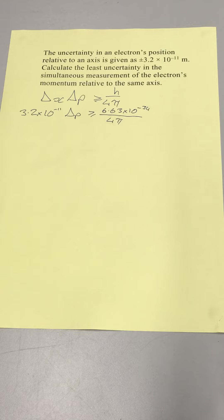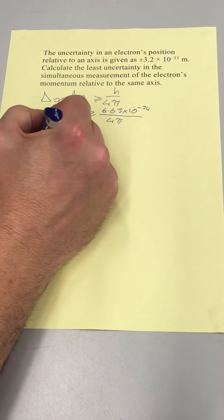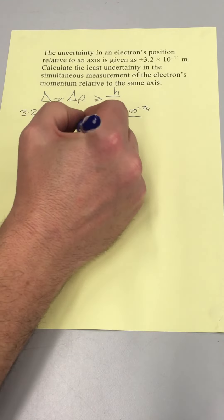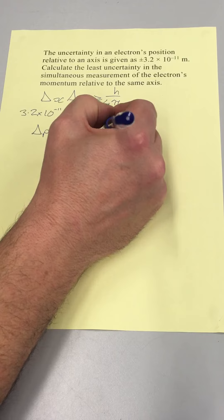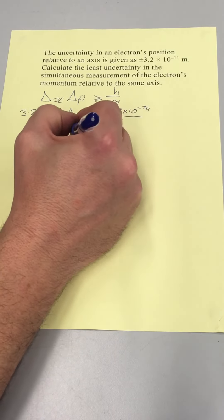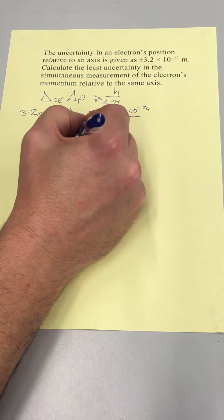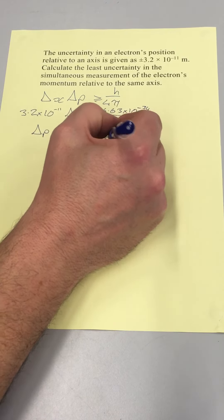What we're supposed to do is rearrange for delta p, greater than or equal to Planck's constant divided by 4pi times the uncertainty in the position.